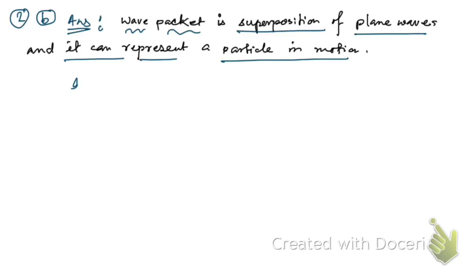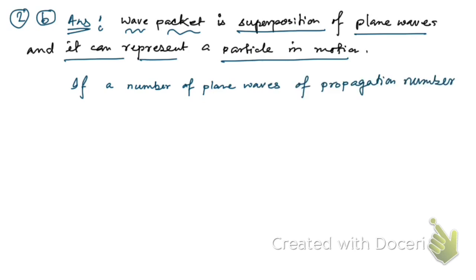If a number of plane waves of propagation numbers slightly different from the average value travel along the same line in the positive x-direction in a medium, a wave packet of small spatial extension is formed.